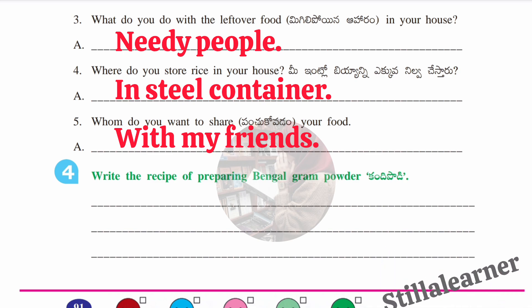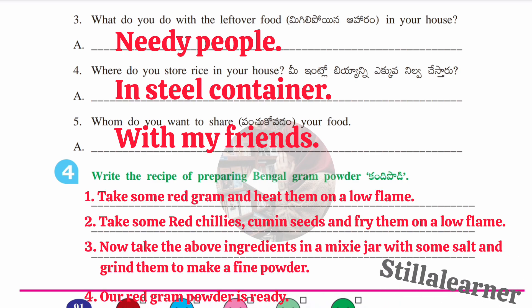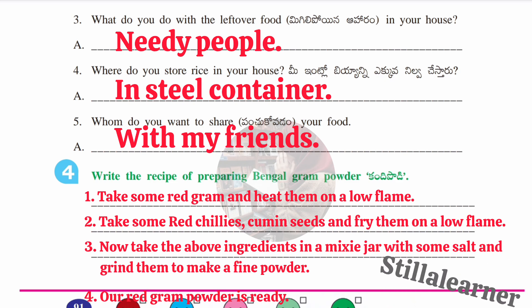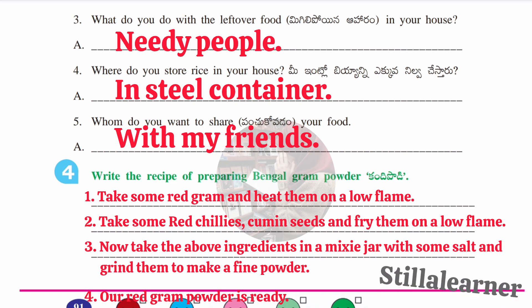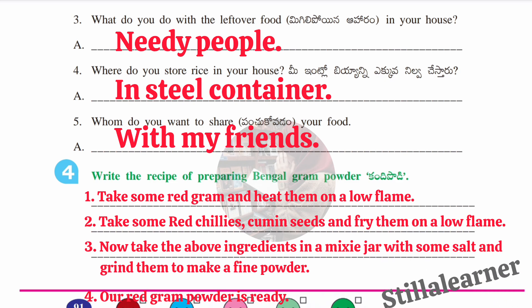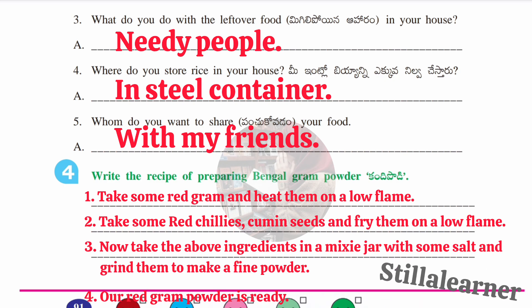The fourth section: write the recipe for preparing Bengal gram powder. First, take some red gram and heat them on a low flame. Second, take red chilies and cumin seeds and fry them on a low flame. Third, take all the above ingredients in a mixi jar with some salt and grind them to a fine powder. Fourth, your red gram powder is ready.